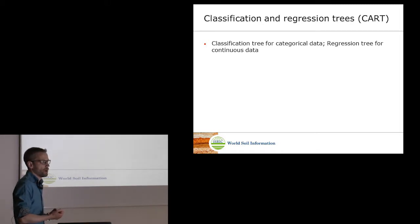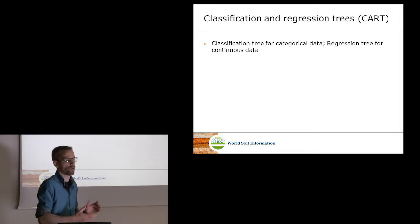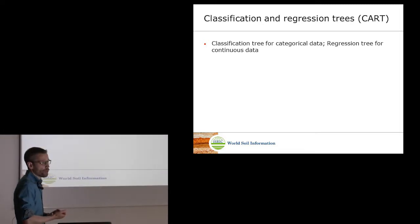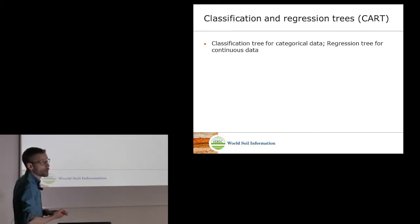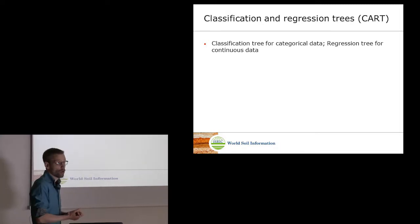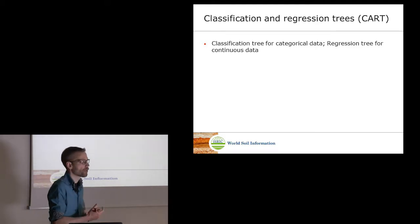Random forest modeling is based on tree models. Let's first start with a single tree and then go from a tree to a forest, because if you understand how a tree works, you'll also understand how a forest of trees works. An acronym you often see in the literature is CART — Classification and Regression Trees. Classification trees are used for modeling categorical data such as soil classes, while regression trees are used for modeling continuous data such as carbon or pH.